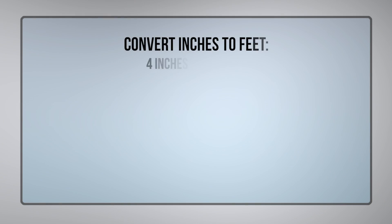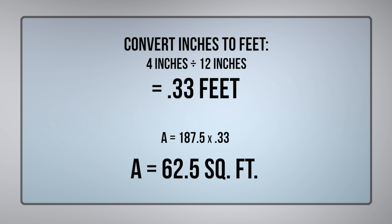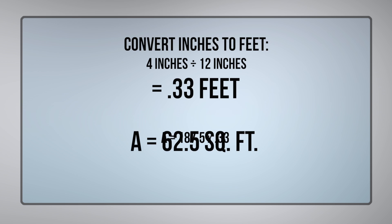To calculate how many tissue rolls we can make from one parent roll, we first need to calculate the square footage in each tissue roll. Let's start by converting inches to feet — we divide 4 inches by 12 inches, which gives us 0.33 feet. Next, we calculate the square footage of each toilet paper roll by multiplying its width by its length, which gives us 62.5 square feet on every toilet paper roll.